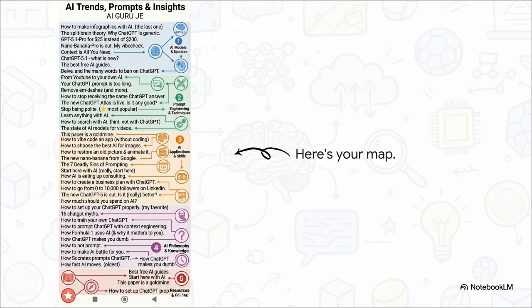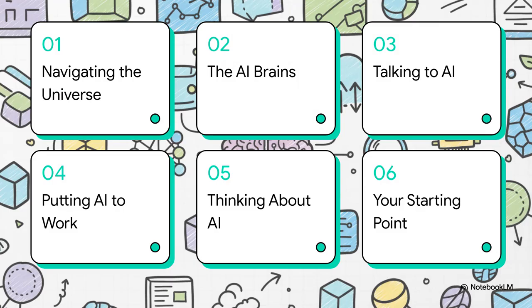That is exactly what we have today. Think of this fantastic infographic — this is going to be our map. It's so clear, it's wonderfully organized, and it just cuts right through all that noise. It gives us this perfect bird's eye view of the entire AI universe, right as it is today. Think of me as your tour guide for the next few minutes, and this is our itinerary: first, we're going to navigate this whole universe; then we'll take a look under the hood at the AI brains; after that, we'll figure out how to talk to the AI, see what we can actually do with it, think about the big picture, and finally find a good starting point for you.